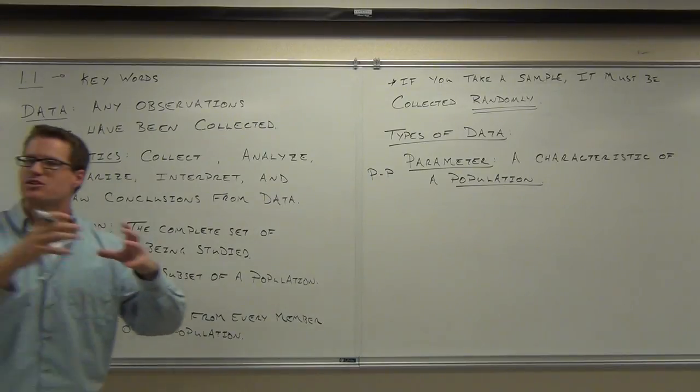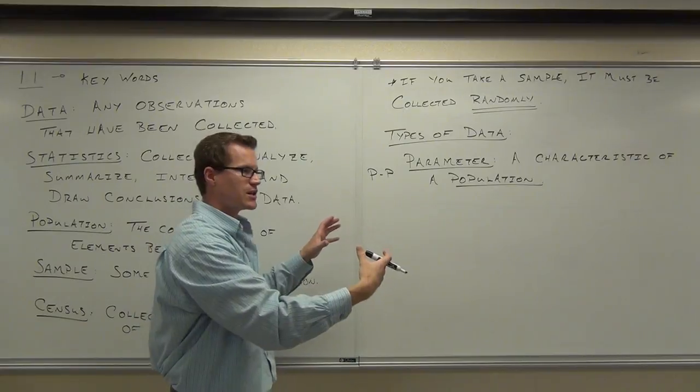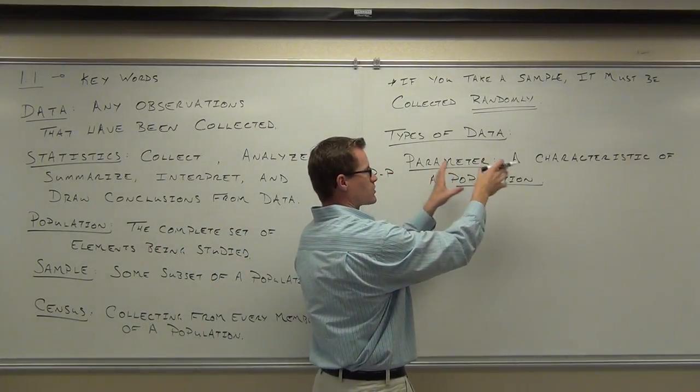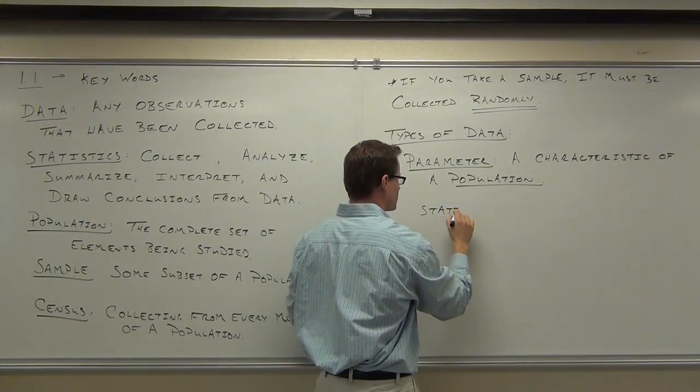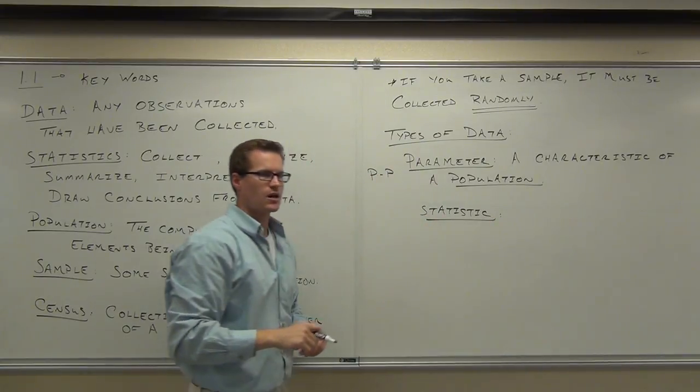The other thing, when we're talking about samples, the word we use for this class is a statistic. A statistic has to do with samples. So while a parameter is a characteristic of a population, a statistic is a characteristic of a sample.